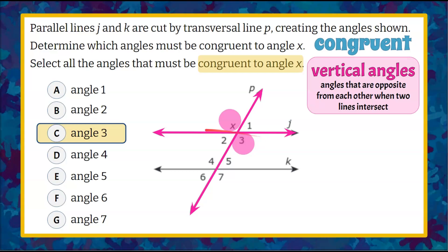So that's one angle. We need to identify if there are any others. We know that angle 1 and angle 2 are not vertical to angle X, so they will not be congruent. So let's clean up our workspace.